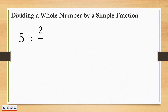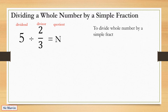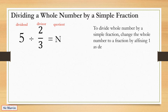Let us divide a whole number by a simple fraction: 5 divided by 2 thirds equals n. To divide a whole number by a simple fraction, change the whole number to a fraction by affixing 1 as the denominator. So 5 becomes 5 over 1.